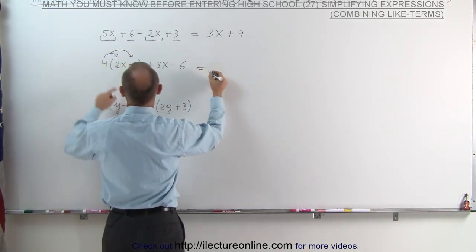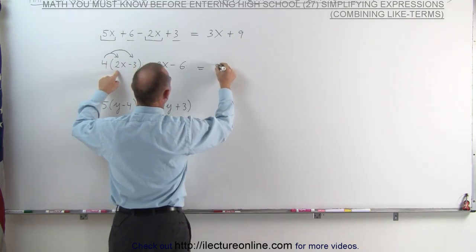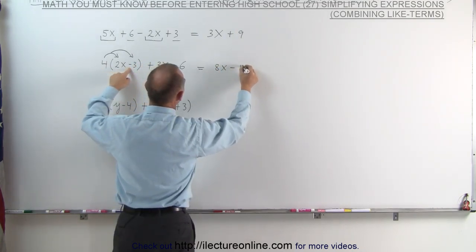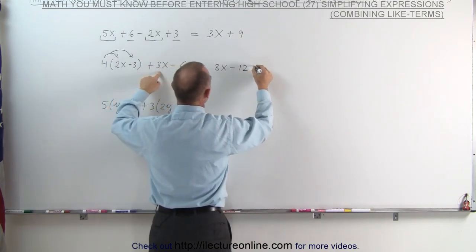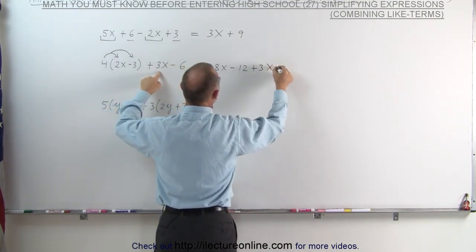This can now be written as 4 times 2x, which is 8x, and 4 times a minus 3, which is a minus 12. The rest stays the same, plus 3x minus 6.